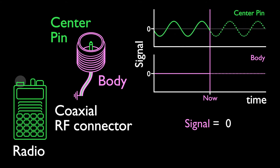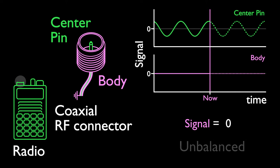Such a pair of signals, where one is zero and the other carries all the information, is called an unbalanced signal.